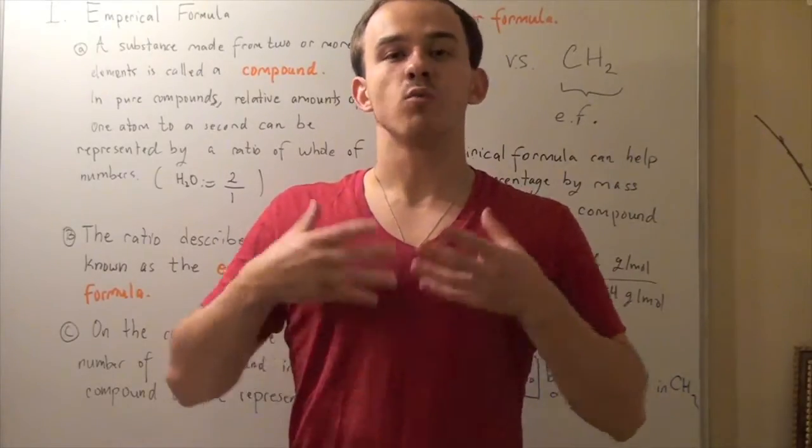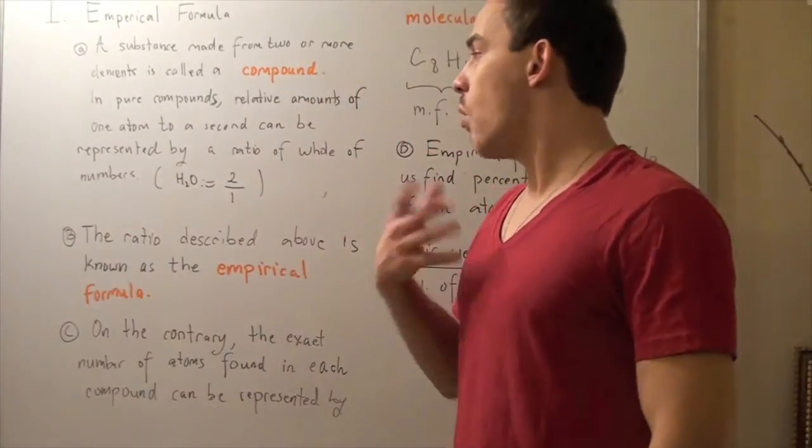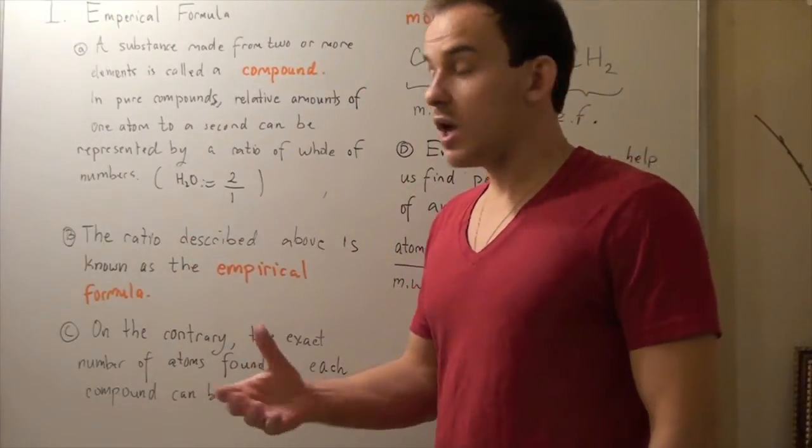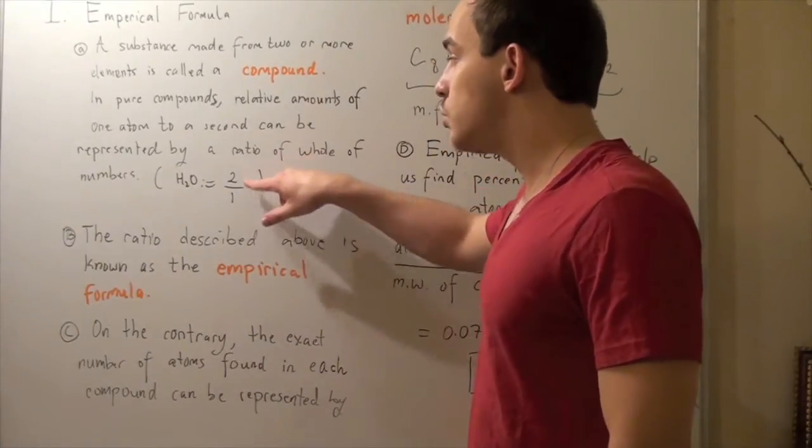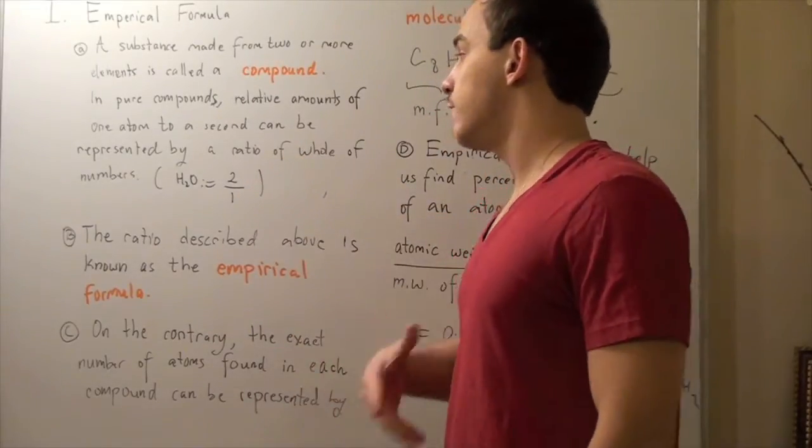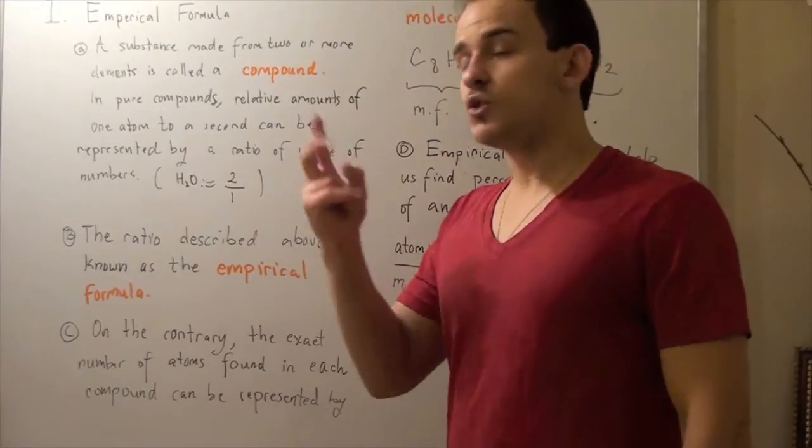For example, let's look at a water molecule. The formula for water is H2O, and the ratio of our H molecules to our water molecules is 2 to 1. In other words, for every O molecule, there are two H molecules.